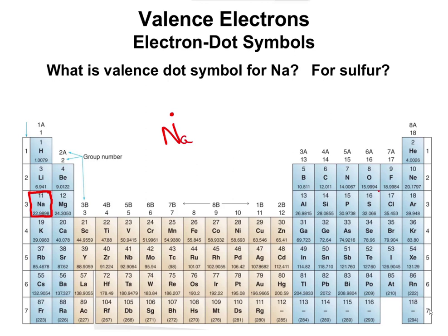For sulfur, we find sulfur on the periodic table. And we say, okay, sulfur has six valence electrons because it's in group 6A. So sulfur, we count the dots. One, two, three, four. Then we need to do two more. Now we can start pairing them, and I'll draw it like that.